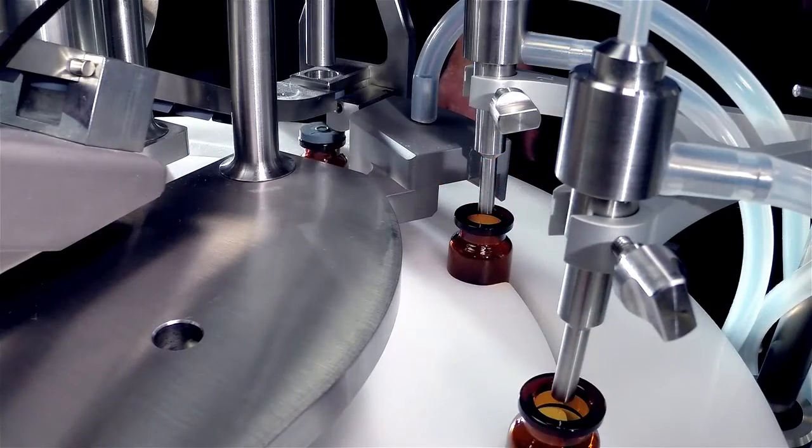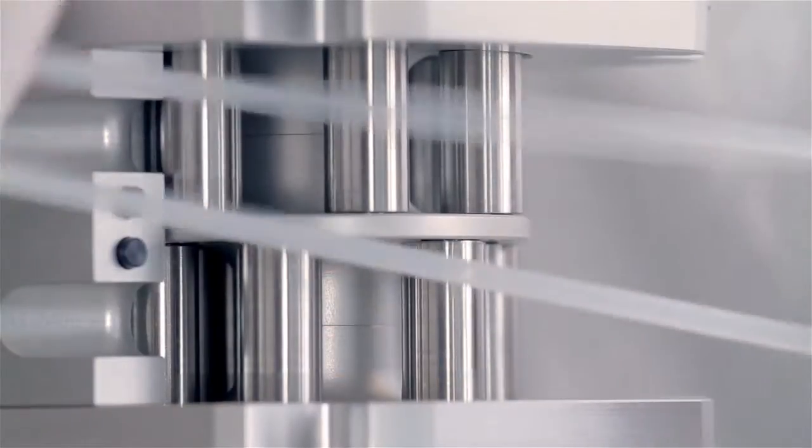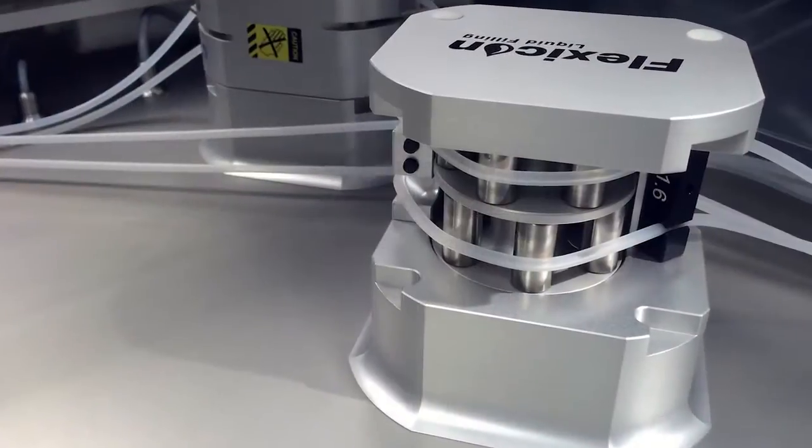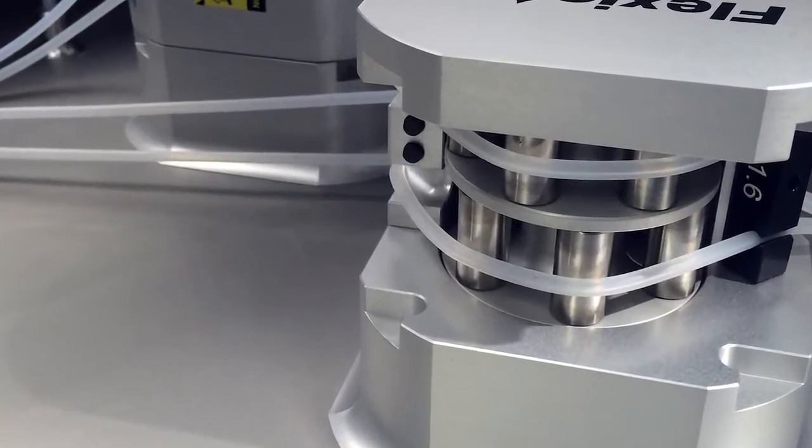Peristaltic fillers prevent costly overfilling on volumes from less than 0.2mL to 100mL. Liquid only contacts a single use fluid part, so a changeover from one liquid to another can be done quickly without the risk of cross contamination.